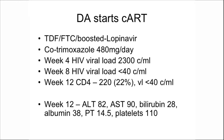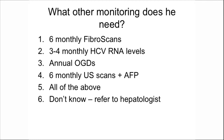We're doing very well with this man. The next question is: what other monitoring does he need? Should we do six-monthly fibroscans? Three to four monthly HCV RNA levels? Annual upper GI endoscopies? Six-monthly ultrasound scans and alpha-fetoprotein? All of the above, or we don't really know?